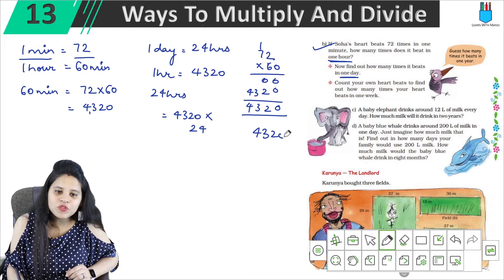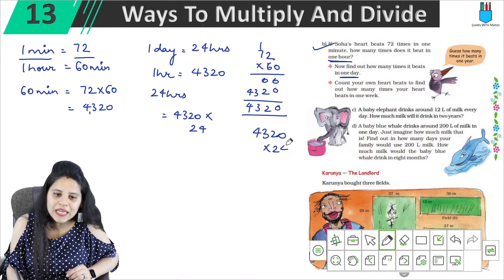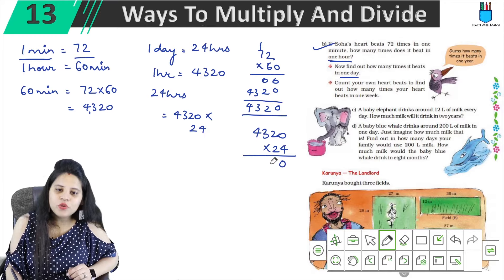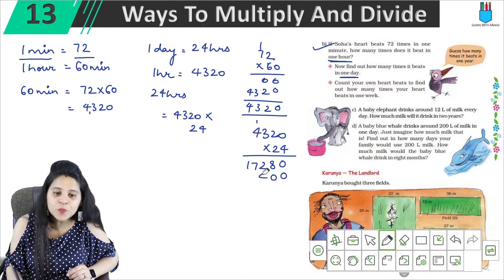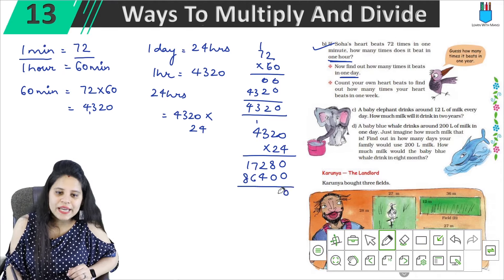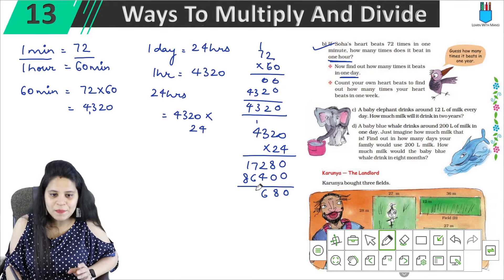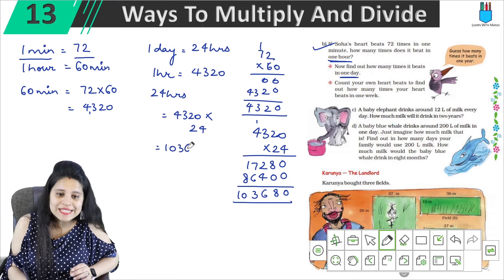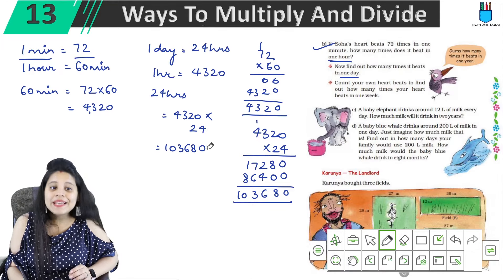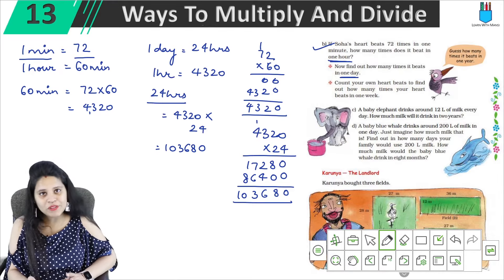We multiply 4,320 into 24. First, 4 into 0 is 0, 4 into 2 is 8, 4 into 3 is 12, 4 into 4 is 16 plus 1 is 17. Then 2 into 4,320 gives 0, 8, 6, and carrying through we get 103,680. So the heart will beat 103,680 times in one day or 24 hours.